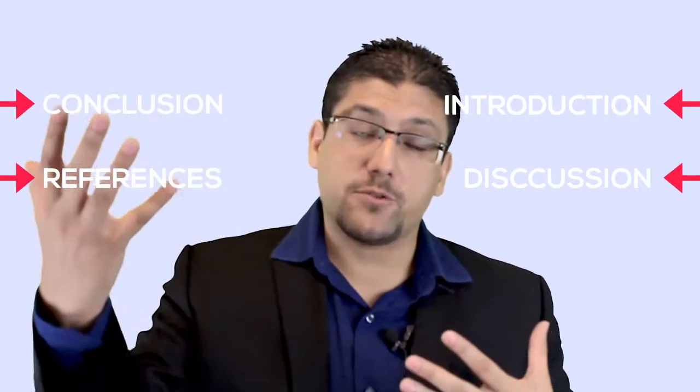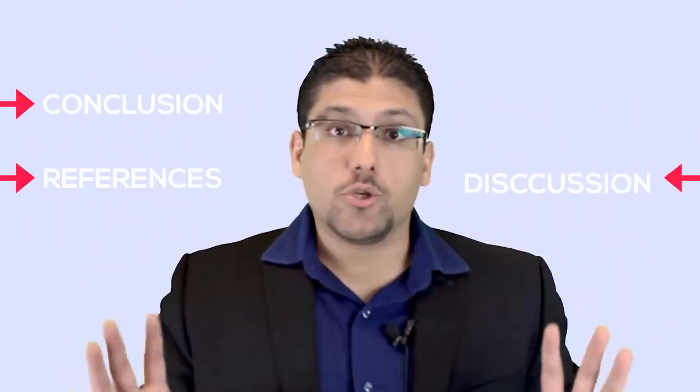A traditional review will have tables and figures and all the sections of an article — introduction, discussion, conclusion, references, and the abstract. But you will not follow any guidelines; method and results are optional, inclusion-exclusion criteria is optional, no guidelines, no quality check. This is a traditional review, also called a literature review or narrative review.